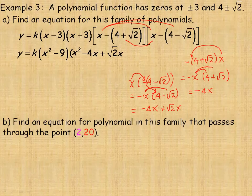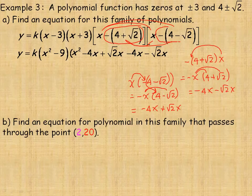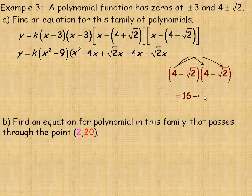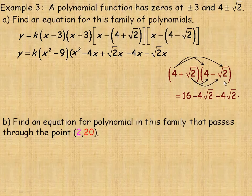The last two terms come from multiplying the constants in each bracket. Notice the negative times negative is positive, so we just multiply 4 plus root 2 by 4 minus root 2. That gives 16, then minus 4 root 2, plus 4 root 2, and minus root 2 times root 2 which is minus 2. The middle terms add to 0, leaving 16 minus 2, which is 14.